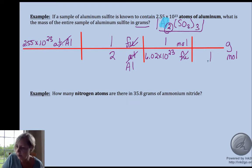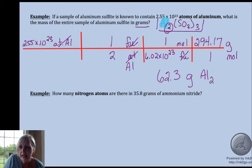A formula unit is what you count, so that's where you will put Avogadro's number. Now I can get to mass. I want to get rid of moles of aluminum sulfite and get to mass. Mass to moles, use molar mass. The molar mass of aluminum sulfite is 294.17.